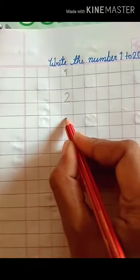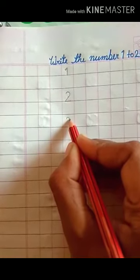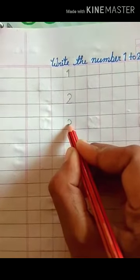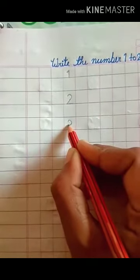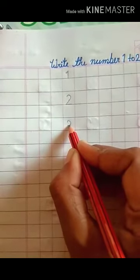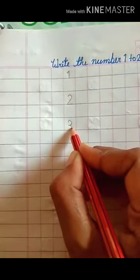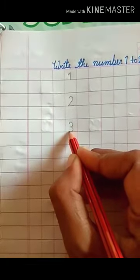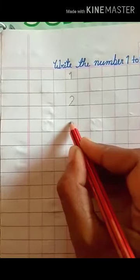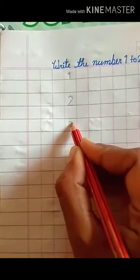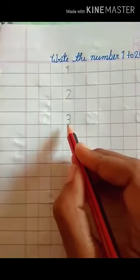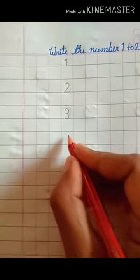Draw right curve, then draw another right curve. This is number 3.